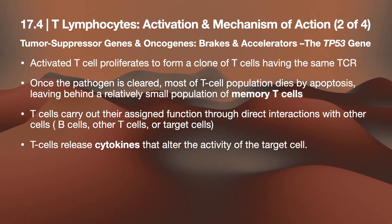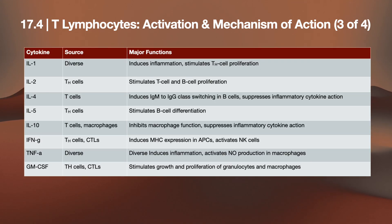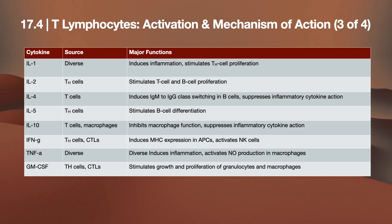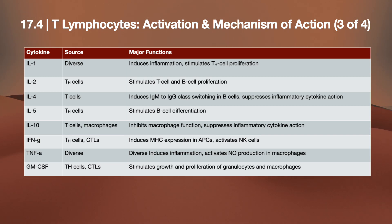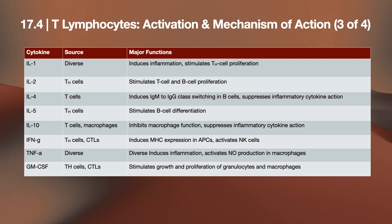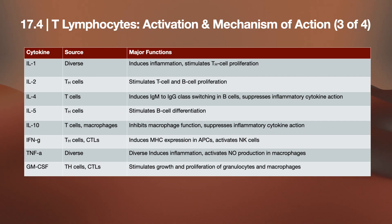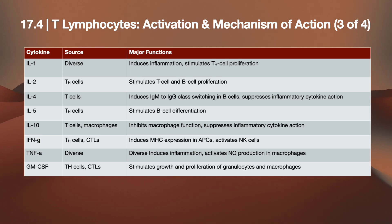T cells release cytokines with diverse functions: IL-1 induces inflammation and stimulates helper T cell proliferation; IL-2 from helper T cells stimulates T cell and B cell proliferation; IL-4 from T cells induces IgM to IgG class switching in B cells and suppresses inflammatory cytokines; IL-5 from helper T cells stimulates B cell differentiation; IL-10 from T cells and macrophages inhibits macrophage function and suppresses inflammatory cytokine action; IFN-gamma from helper T cells and CTLs induces MHC expression in APCs and activates natural killer cells; TNF-alpha from diverse sources induces inflammation and activates nitric oxide production in macrophages.